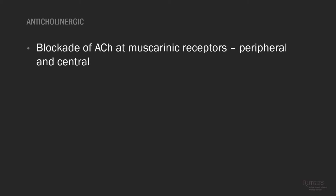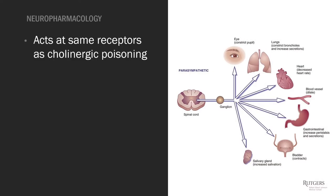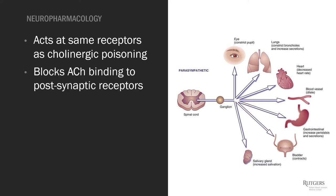The next toxidrome is anticholinergic — the opposite of the cholinergic toxidrome. The drugs and toxins associated act by blocking the action of acetylcholine at muscarinic receptors, both peripherally and centrally. Many of these toxins are found in nature, and there are a wide number of drugs with anticholinergic effects — whether primary or secondary. Instead of causing overstimulation with acetylcholine, it blocks acetylcholine from binding to postsynaptic receptors, affecting salivary glands, GI tract, sweat glands, and the eyes.